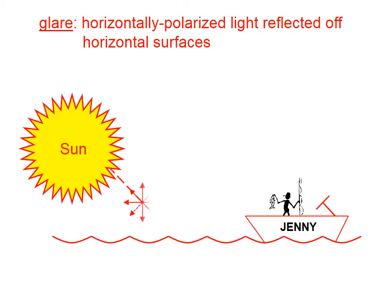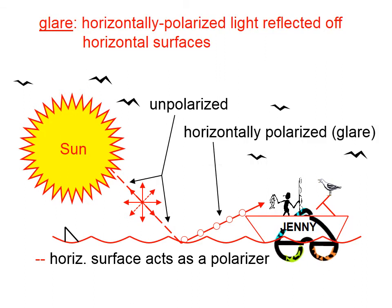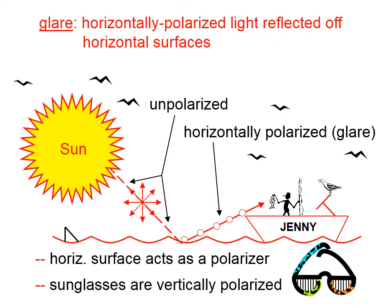Glare is horizontally polarized light that's reflected off of horizontal surfaces. So if we have light from the sun, which is unpolarized, when it reflects off of horizontal surfaces, the horizontal surface acts as a polarizer. The light is going to be polarized horizontally — the vertical component of light has been blocked out. So if we want to block out that horizontally polarized light, which we call glare, sunglasses are vertically polarized.